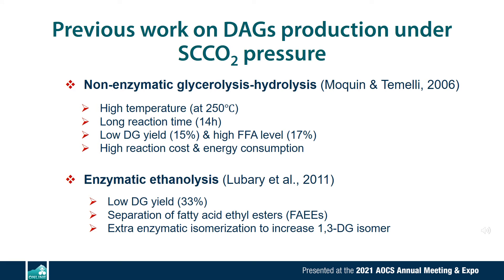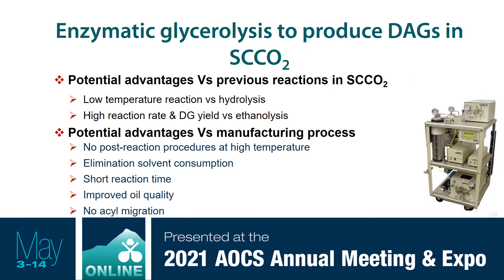So far, only two works have been done on DAG production under SCCO2. One is a non-enzymatic glycerolysis, which I have already mentioned is problematic. The second one uses an enzyme-in-ethanol synthesis reaction, but apart from low yield, there is the issue of post-production cleanup. What I want to do is use SCCO2 and enzyme together to conduct miscibility at lower temperatures. The reaction rate in this system increases, so we expect higher DG yield, with no post-reaction cleanup at high temperature, reduced solvent consumption, and decreased reaction time. I advocate conducting enzymatic glycerolysis in supercritical carbon dioxide as a promising technique to produce DAG-enriched structural lipids.